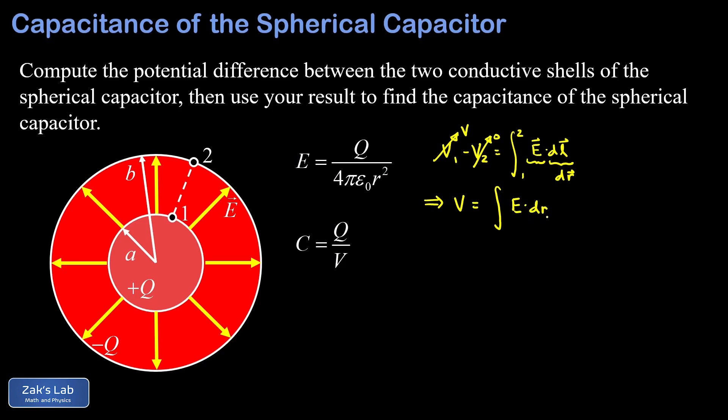And my integration variable must be R. So I'm going to go from the initial value of R to the final value of R as I go from point one to point two. Well, the initial value was A and the final value was B. Now we can plug in our electric field magnitude and I get the integral from A to B of Q over 4 pi epsilon zero R squared DR. And that's not such a bad integral.